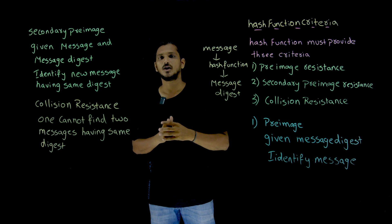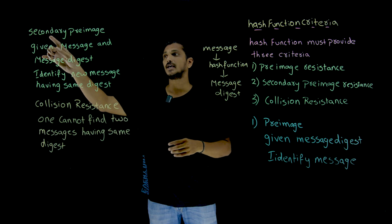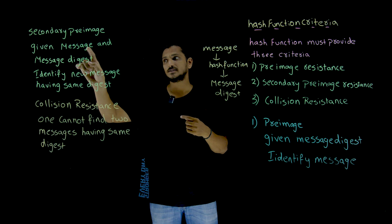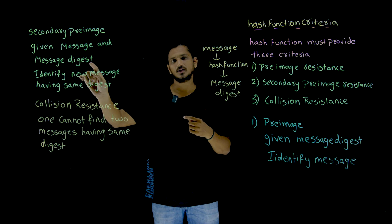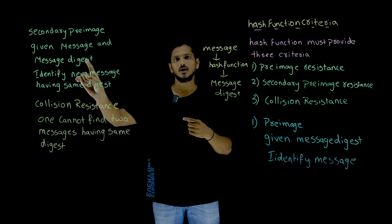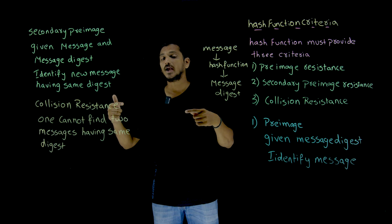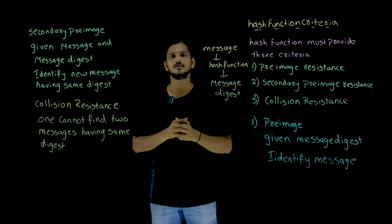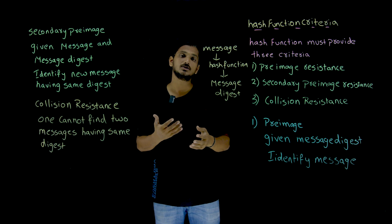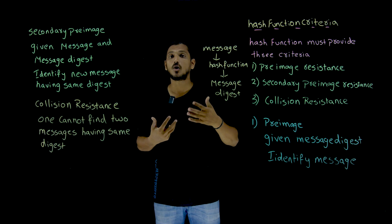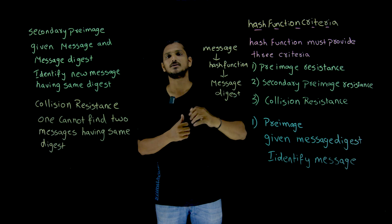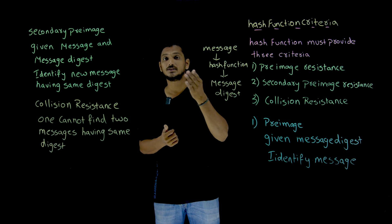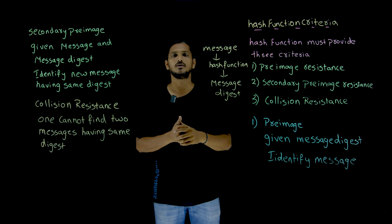Secondary pre-image attack means: if the hacker has both the message and its message digest, is he able to identify a new message that produces the same message digest? No, it is also not possible. He has to check all possibilities of the bits, and if your message is of a large length — for example 5000 bits as covered in the previous class — the number of possibilities is exponential.